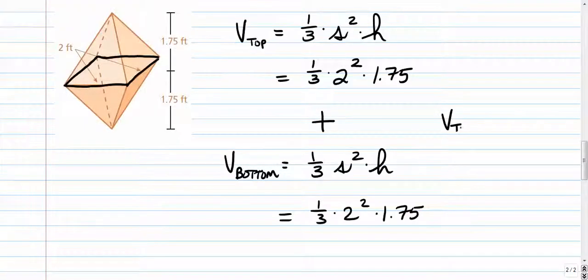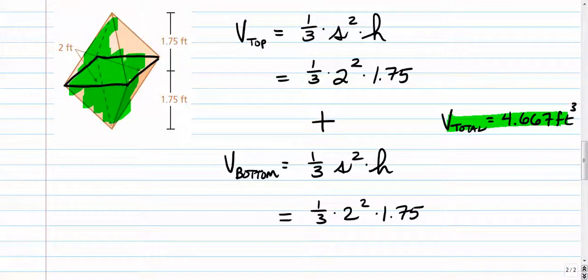So the volume total is 4.667 cubic feet. That's how much stuff you can fit inside both pyramids. That concludes part three.